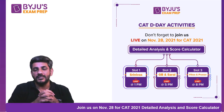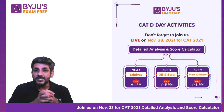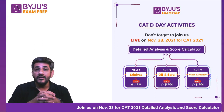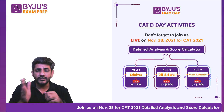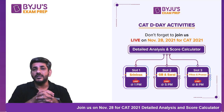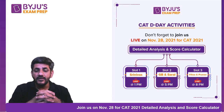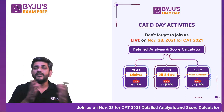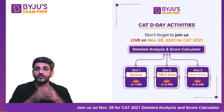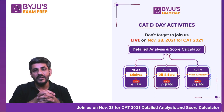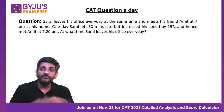I'd like to tell you something about the message on your screen regarding the CAT D-Day activity. On CAT D-Day, that is 28th November, we'll be having an analysis session after every slot. Slot 1, which gets over at around 10:30, will have an analysis session at around 1 PM. Slot 2 analysis will be at 5 PM, taken by GB Sir and me. Slot 3 will be taken by Vikas Sir and Pranav Sir at 8 PM. Join us on that day — you'll be getting a detailed analysis and score calculator for your CAT exam.